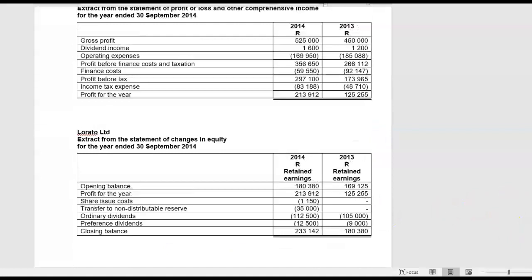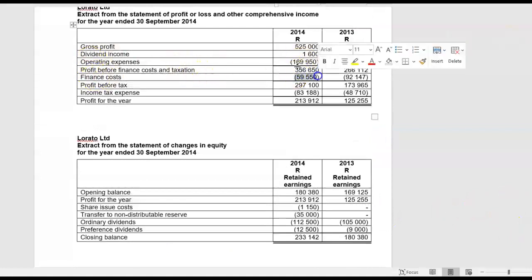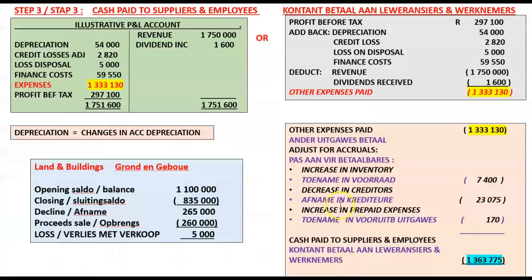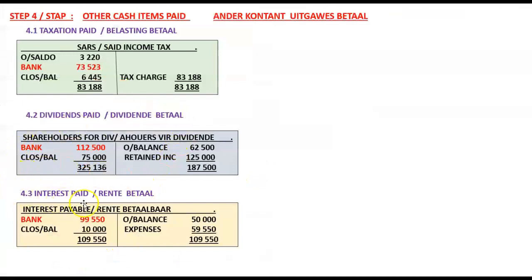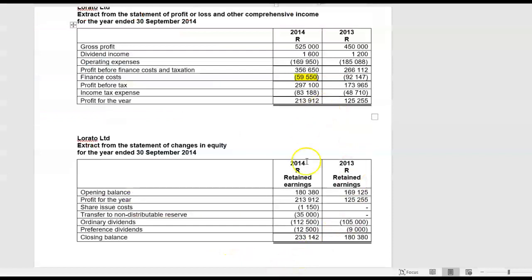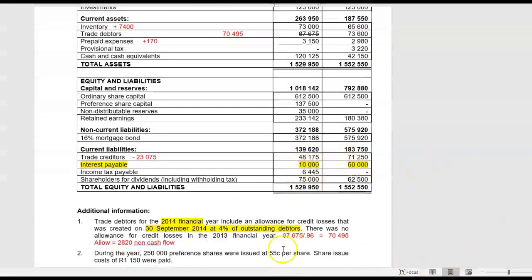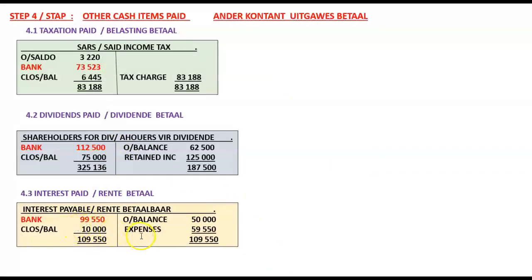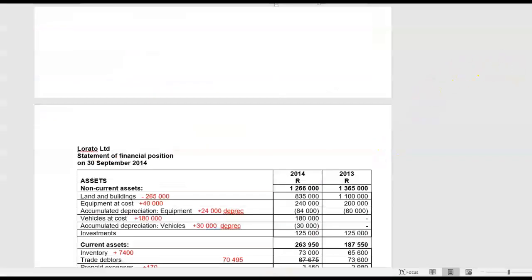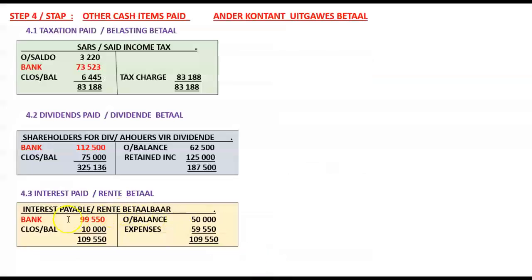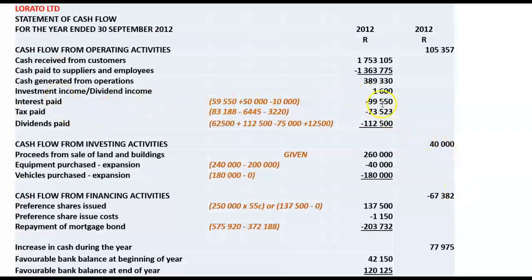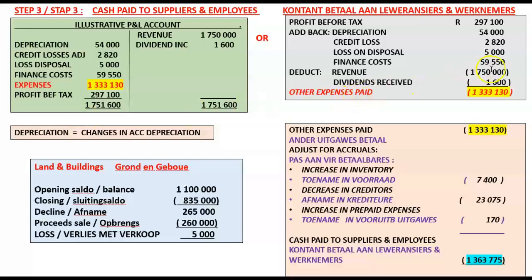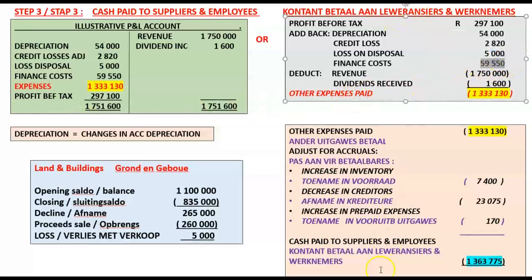So although we have in our income statement an expense of 59,550, that was not the actual amount which we paid during the year. Therefore you have to work out how much was the actual amount paid. Interest payable had an opening balance of 50,000 and a closing balance of 10,000. It had an income statement expense item of 59,550. And therefore when we do the T account we can establish that we actually paid interest for the year in the amount of 99,550.